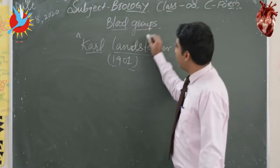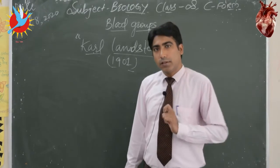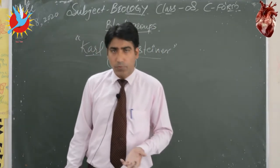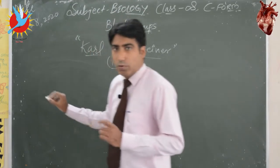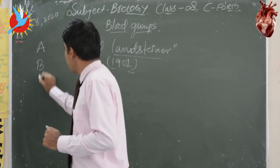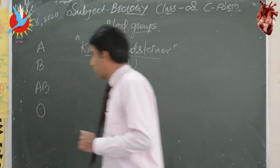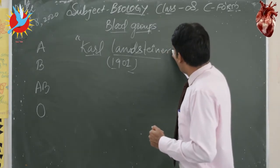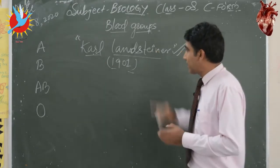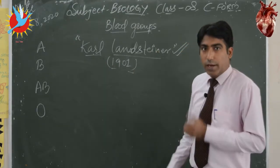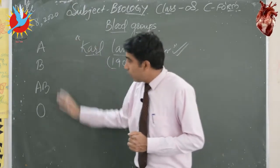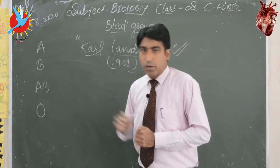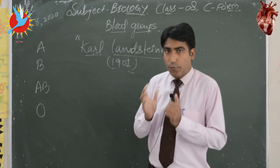Now we are going to discuss human blood groups. Different people may have different kinds of blood groups. In humans we have a total of four kinds of blood groups: A, B, AB, and O. A biologist named Karl Landsteiner in 1901 told us that in human races there are different kinds of blood groups — A, B, AB, and O — four main types.